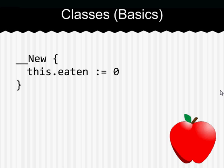So, we're going to create one function called new. These are meta functions, and they're easily identifiable by having two underscores before them. So, our new method is going to set this.eaten to 0. This refers to the current apple. There should be parentheses here because it is a function. That's a slight mistake.